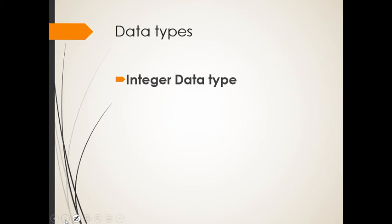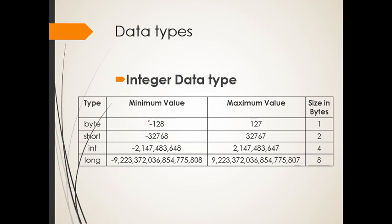Integer literal, or sorry, integer data type. So we have from byte to long. If we will use int, it contains this minimum value going to the maximum value. And the size in bytes, it's 4. So if we convert that one into bits, 8 times 4 is equivalent to 32. Yeah, it's 32 bits. Right? So be careful in using data types because it will get memory allocation.